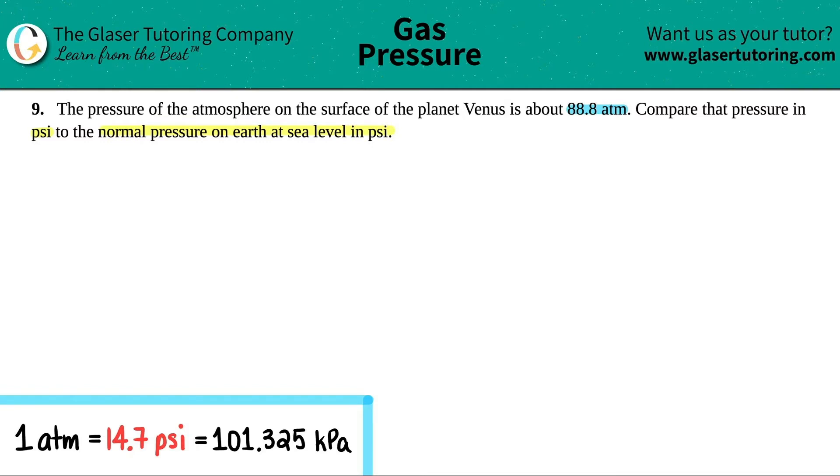So I'm going to break this up because we're talking about two different things here. We're talking about pressures that are existing on Venus, and then it says compare this to the normal pressure on earth. So we're going to do all of our earth pressures on the right side.